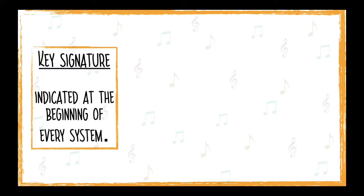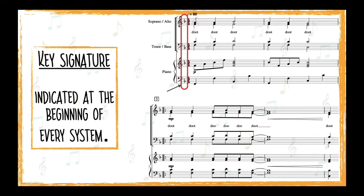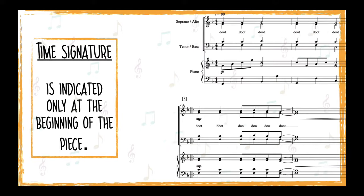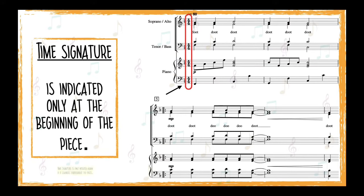Just like clefs, the key signature is indicated at the beginning of every system. Sometimes you might encounter a new key signature within the system — that means the piece has modulated and is now sung in a different key. Time signature is indicated only at the beginning of the piece and will only appear again within the piece if there is a change in meter.